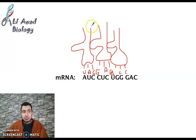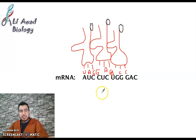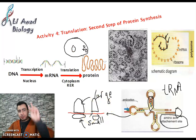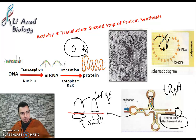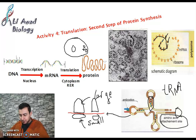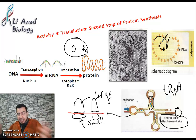Each tRNA carries an amino acid, and by matching anticodons to codons along the mRNA, amino acids are brought together in sequence. This is how translation occurs. The tRNA knows both languages: it reads the mRNA nucleotide language and delivers amino acids — the protein language. The mRNA remains intact while the protein is being built from it.